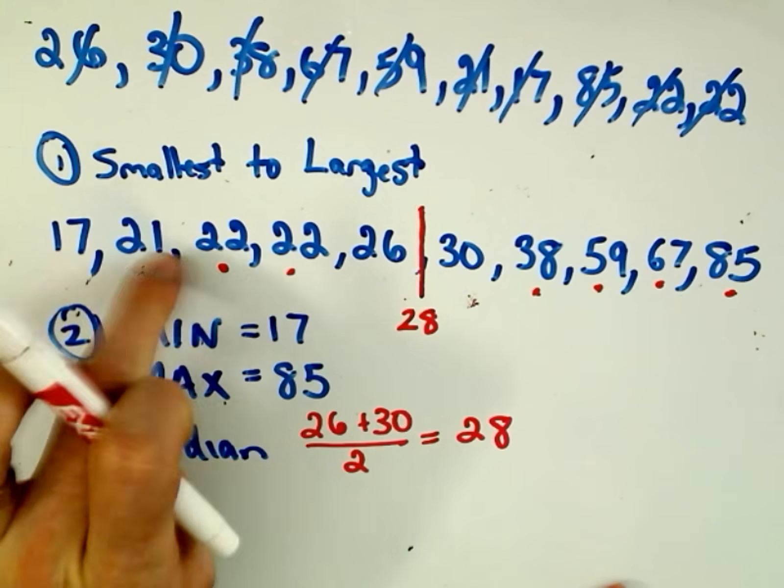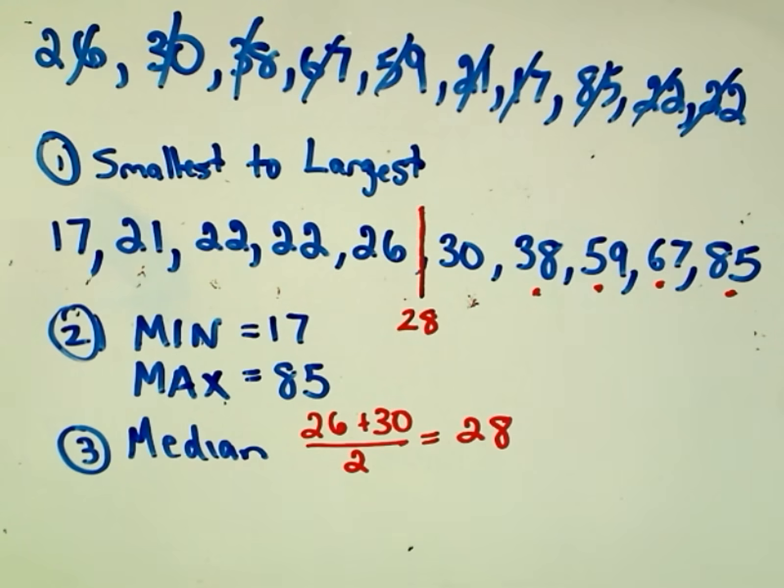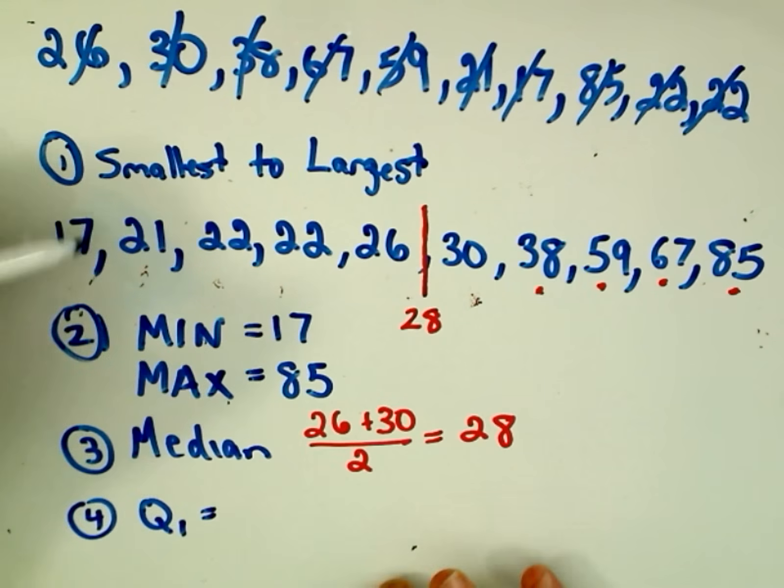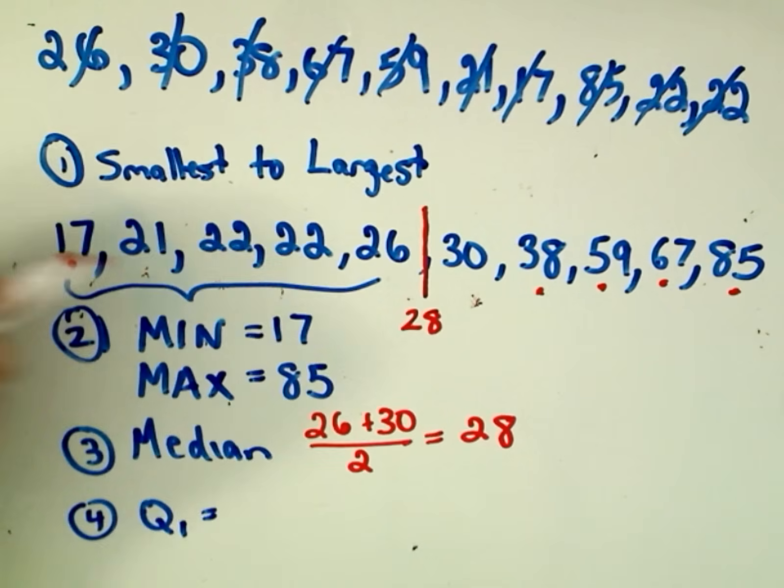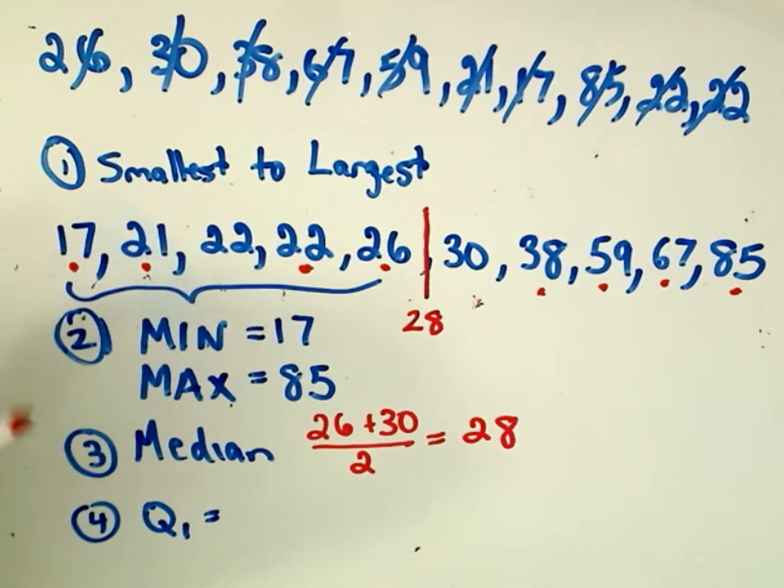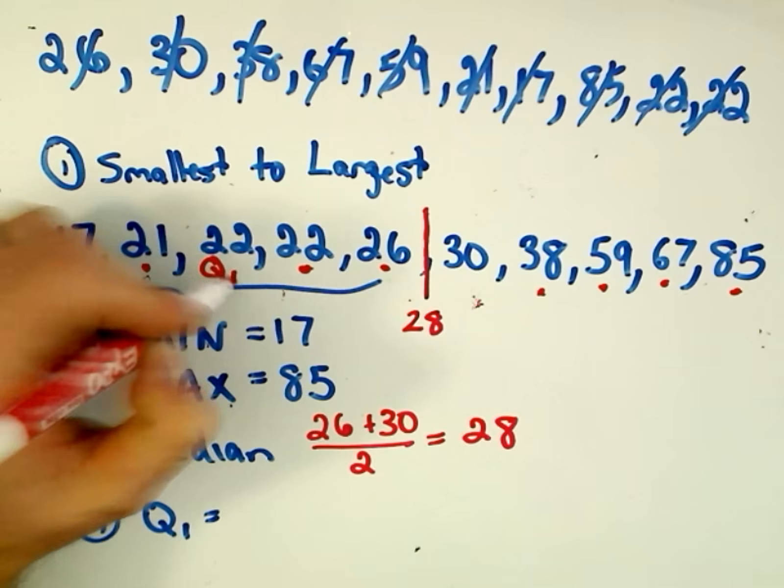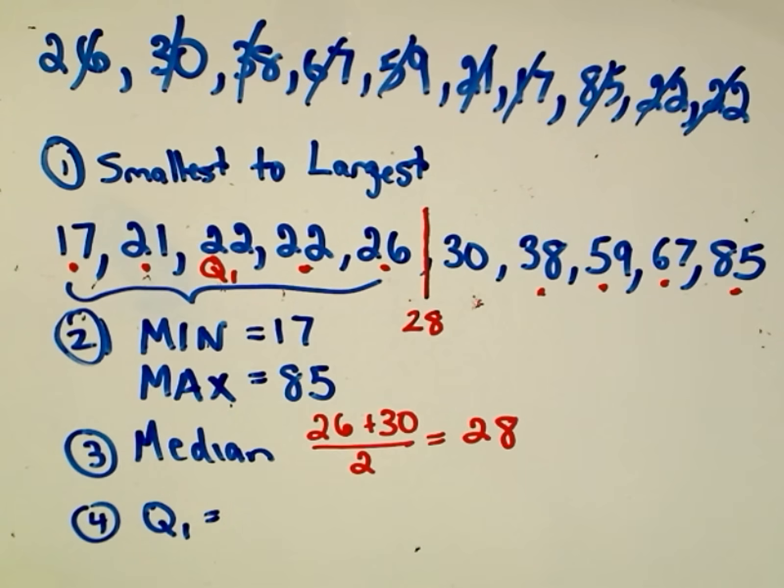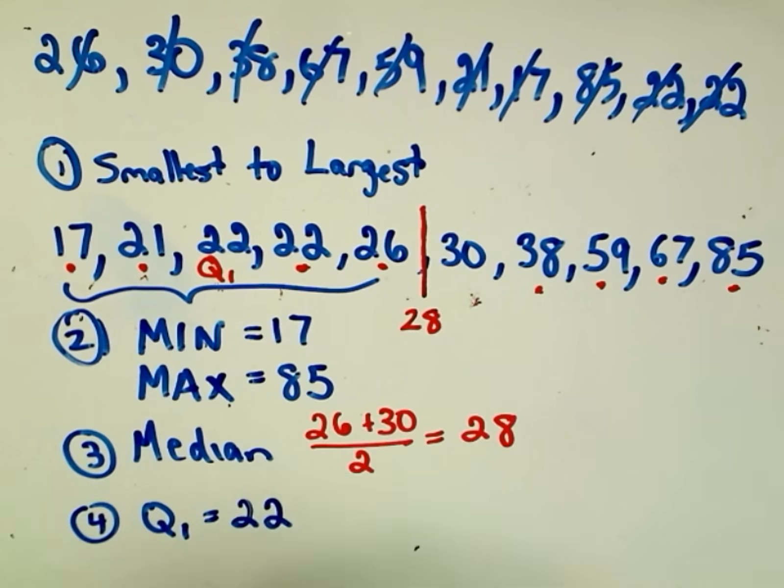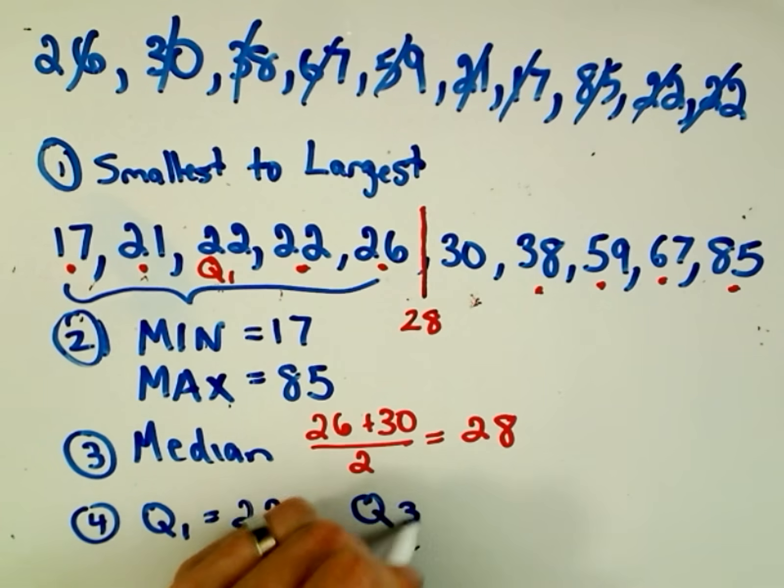Well, notice that 28 kind of fits right here in the middle, and then we do the same thing. To find the first quartile, we basically find the median of the first five numbers. Okay, so we're going to find the median of that set of data that will be our third quartile. And notice now if we pair these up, 17 goes with 26, 21 goes with 22, and now we've got an odd number. So that means our first quartile, the median of the first five points, is going to be the number simply 22.